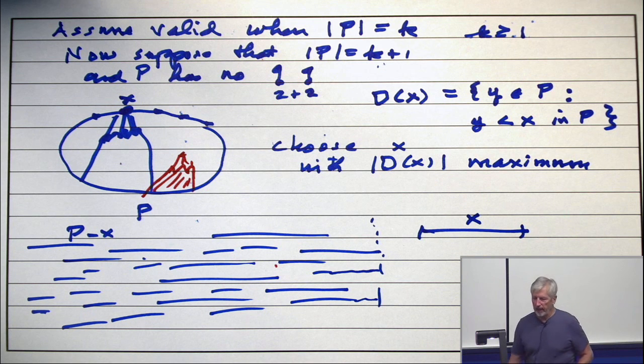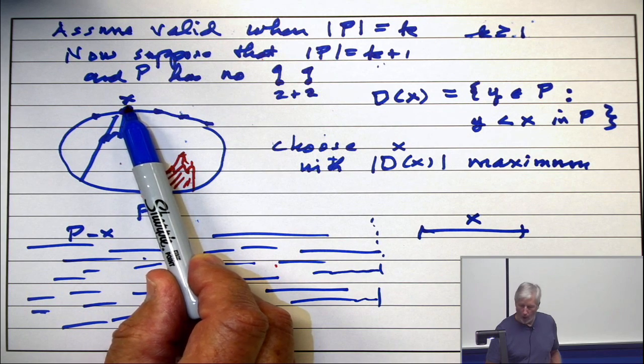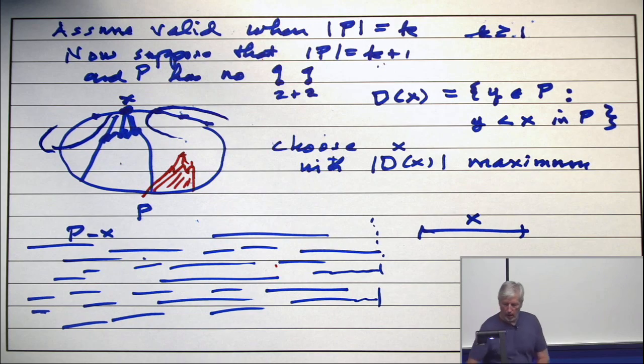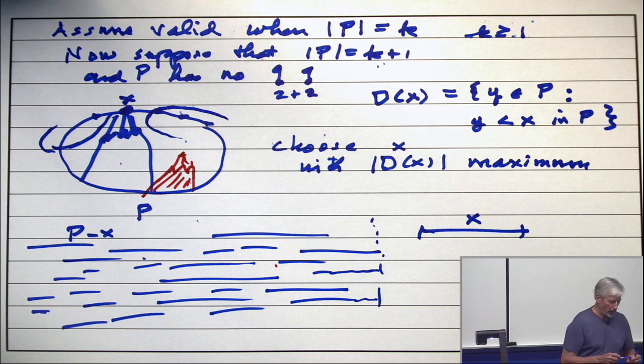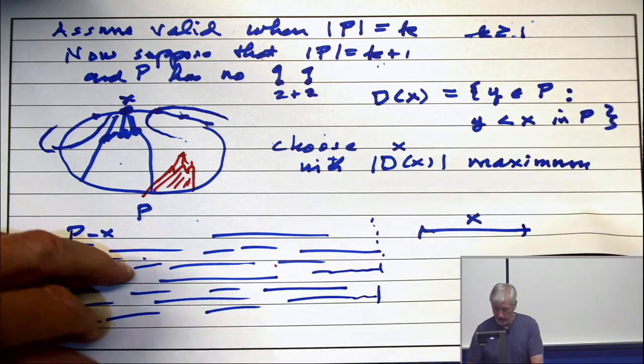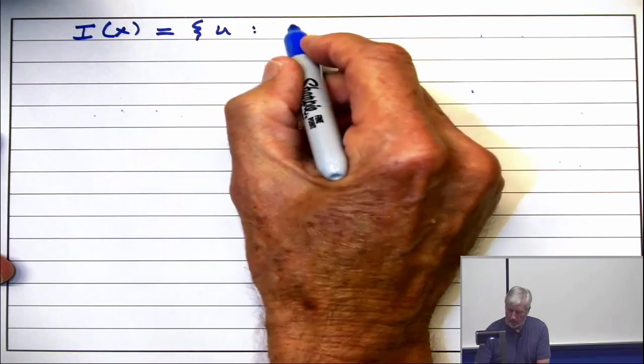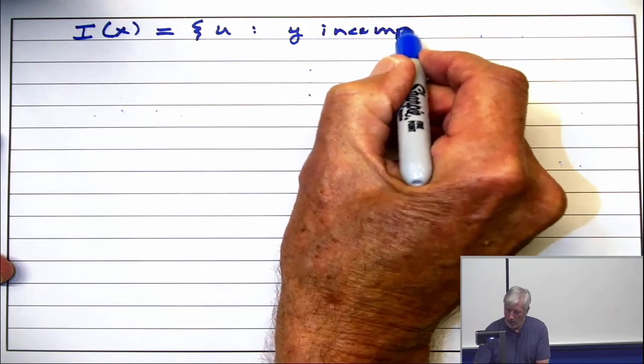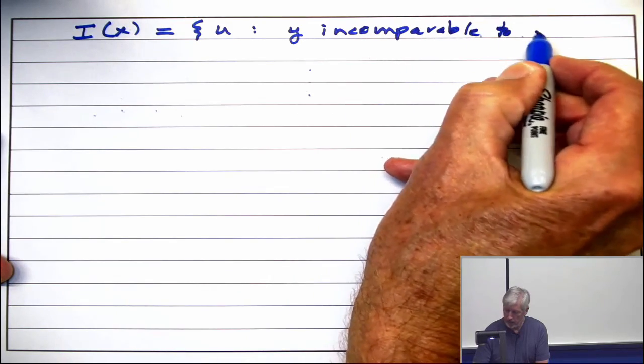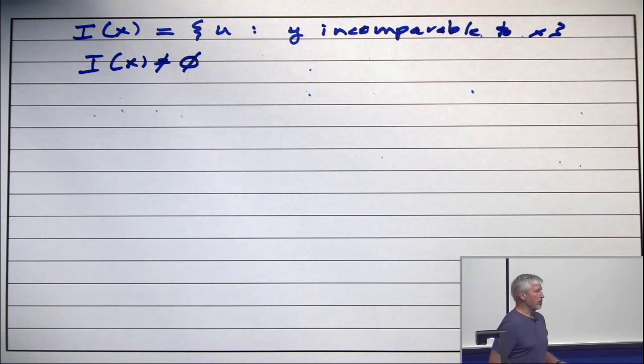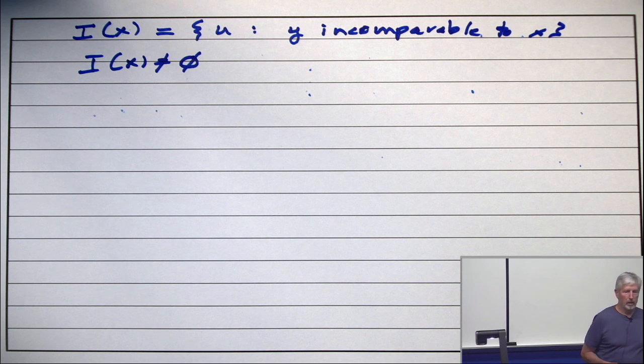So the more interesting case is that X is not the biggest element of them all, and that certain elements are incomparable with X. Now, I can't do this because I got to overlap. I got to be bigger than some things and overlap some other things. Now I have to work a little bit harder. Not much, just a little bit. All right. Now, what we're seeing is the interesting case is that if you set I(X) to be the set of all U where U is incomparable to X, then I(X) is not empty. If I(X) is empty, you're back in the first case where X is the greatest element of them all.